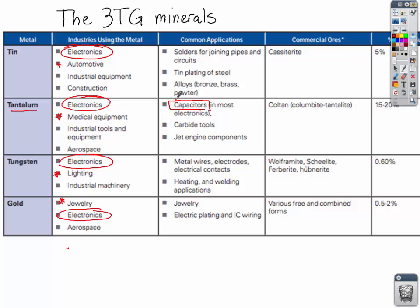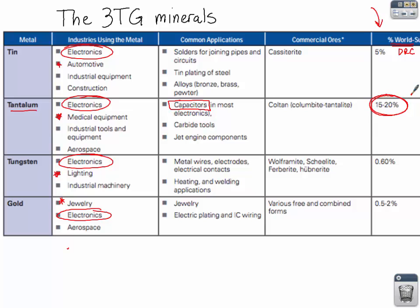Tantalum is inert and extremely useful in electronics. Looking at the percent of the world's supply in the Democratic Republic of the Congo — there's a lot of tantalum there. The smuggling and export of its ore, which is coltan, has really helped fuel war in the Congo. The mines are usually operated by corrupt government officials or even military leaders. When they have control over the ore, they oversee the smuggling of it, and the money they get is usually used for weapons, which fuels further violence.